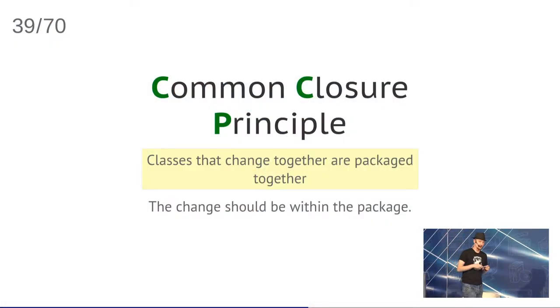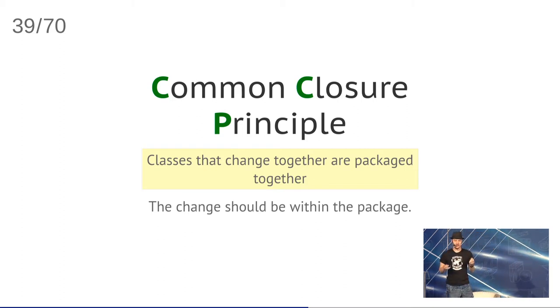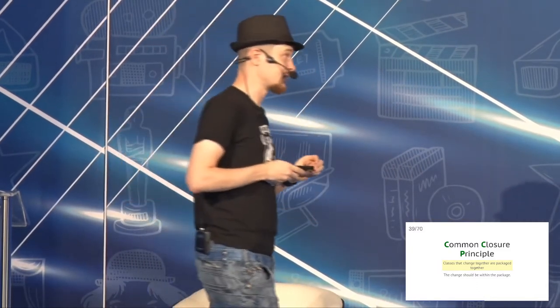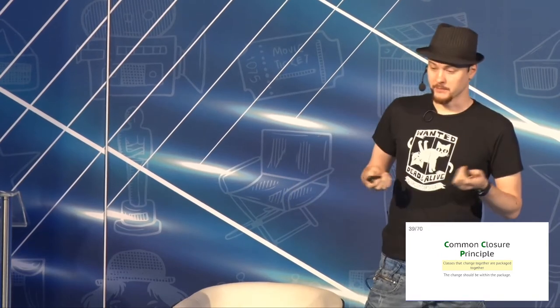The second principle is the Common Closure Principle — classes that change together are packaged together. That's very similar to SOLID's Single Responsibility Principle, which is understood very wrong most of the time. People say a class should do one thing, one job, but that's not correct. The class API should be used by one client — either it's used as a whole or not at all. If a change in a package causes changes in other packages, you're violating this Common Closure Principle, and that's a bad thing.